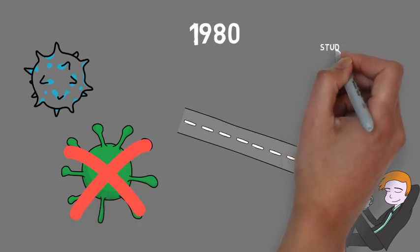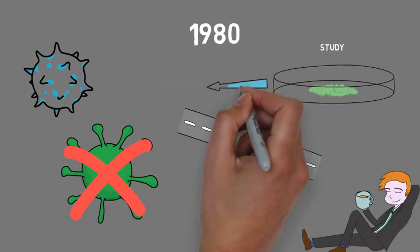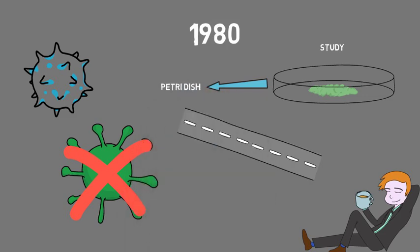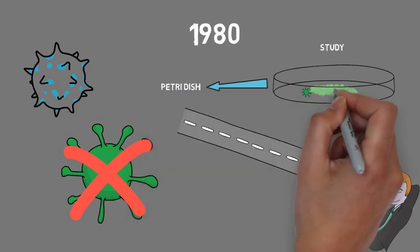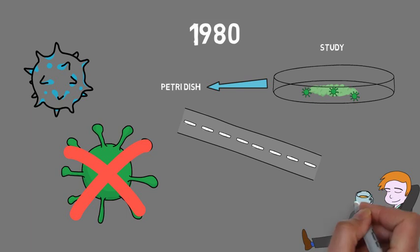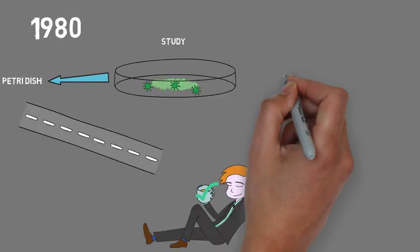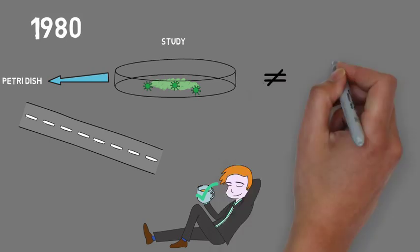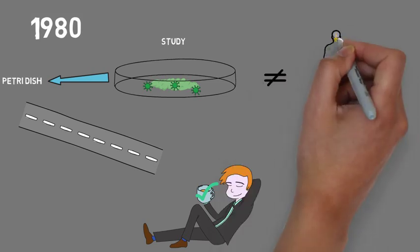So in that first study done in 1980, they started testing green tea by putting green tea ointment into little trays called petri dishes that had viruses on them and saw if the tea was able to kill the viruses. They found that the tea was actually very good at killing the viruses, but the problem was that killing viruses in a petri dish isn't really the same as in the human body.